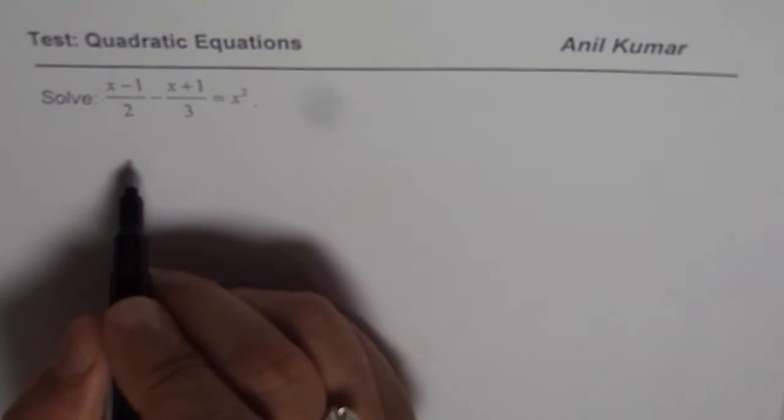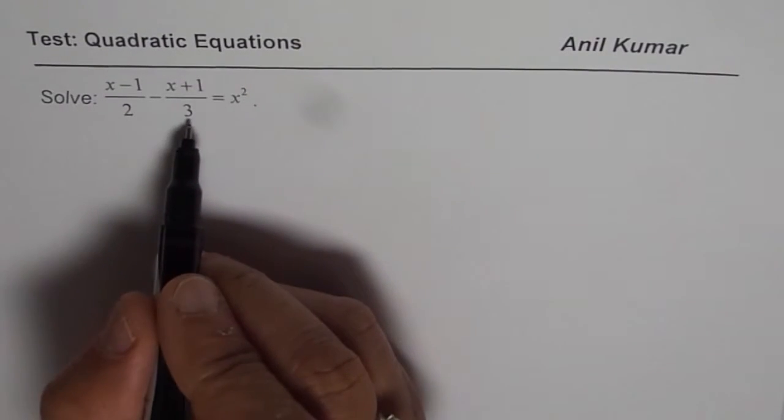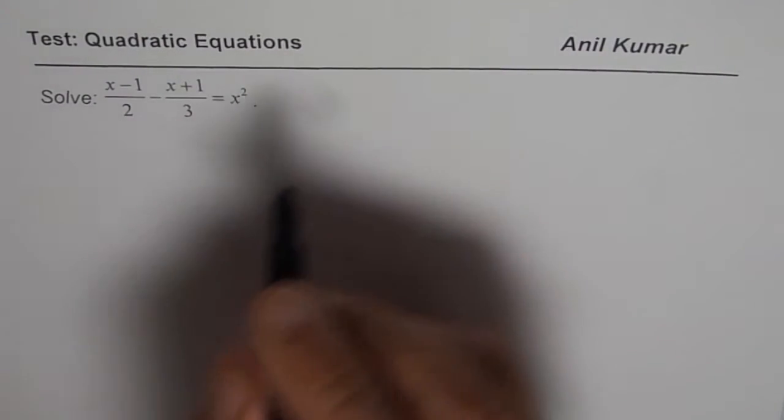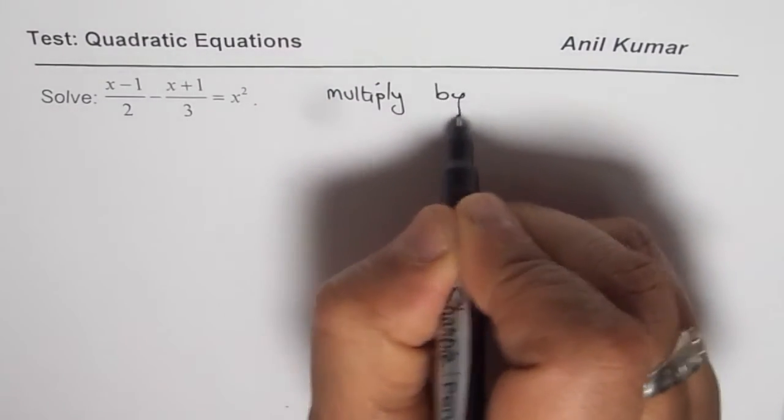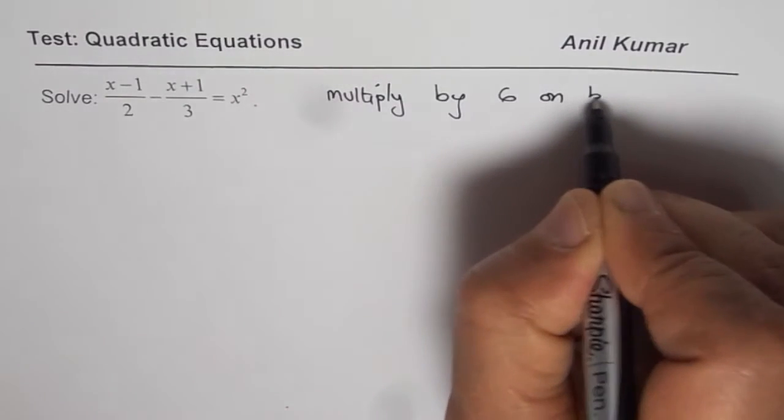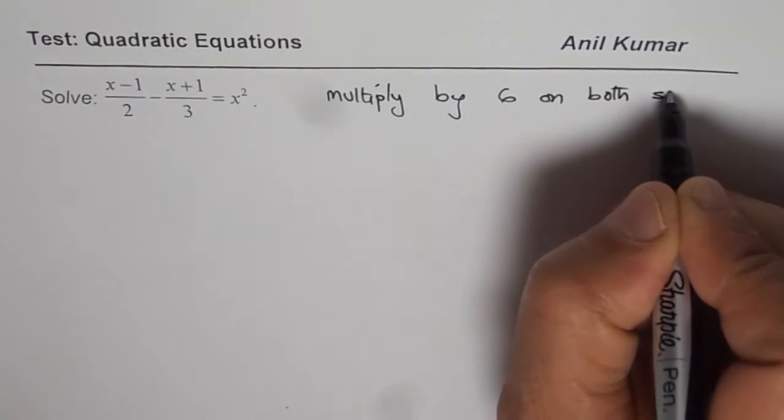Now to solve such an equation we should get rid of fractions. So we can multiply by 6. We will multiply by 6 on both sides. That is our first step.